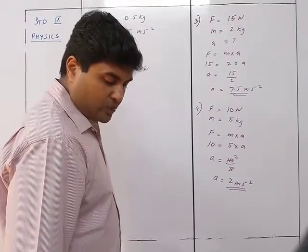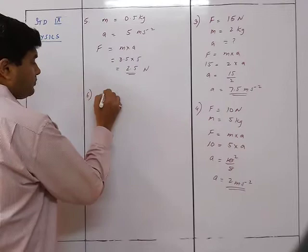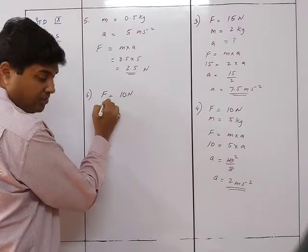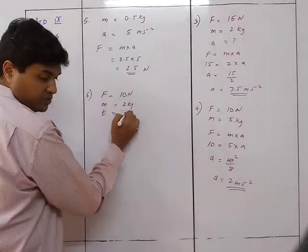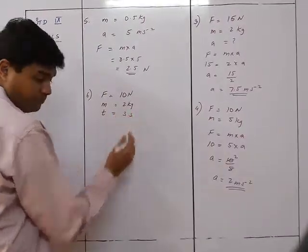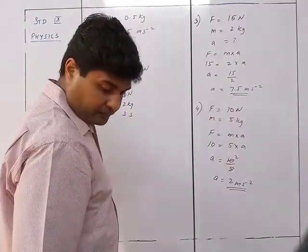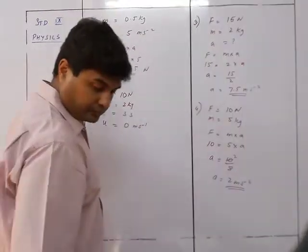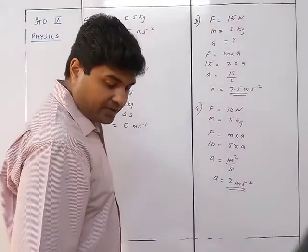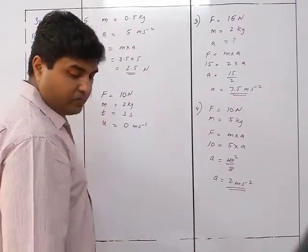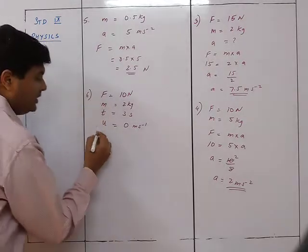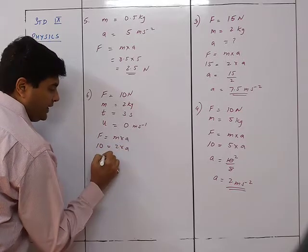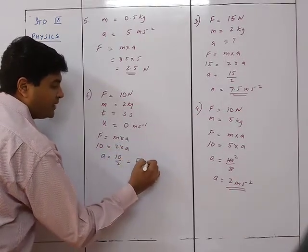Question 6: A force of 10 Newton acts on a body of mass 2 kg for 3 seconds. Initially the body is at rest, so u equals 0. First find acceleration: F equals ma gives 10 equals 2a, so a equals 5 meter per second squared. Then velocity: v equals u plus at equals 0 plus 5 times 3 equals 15 meter per second.